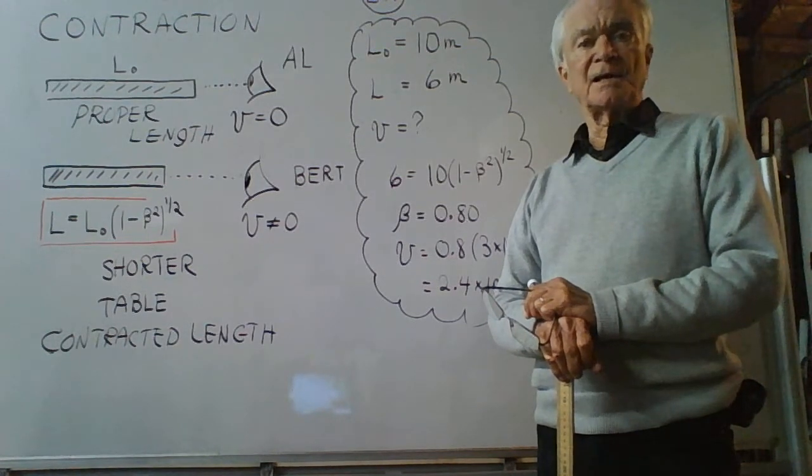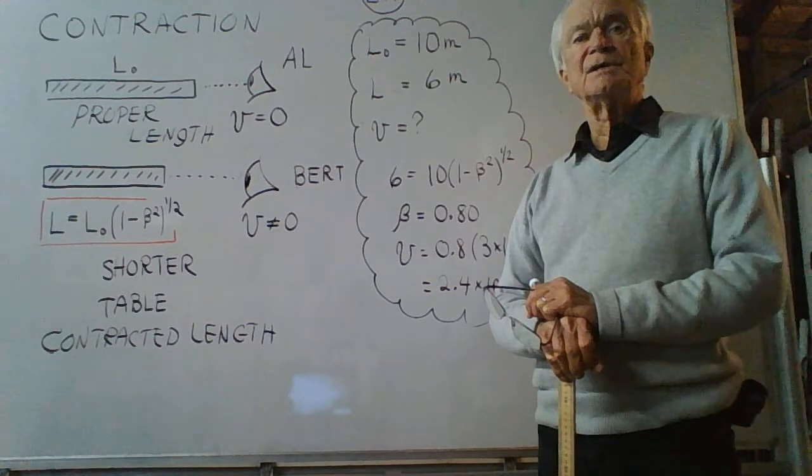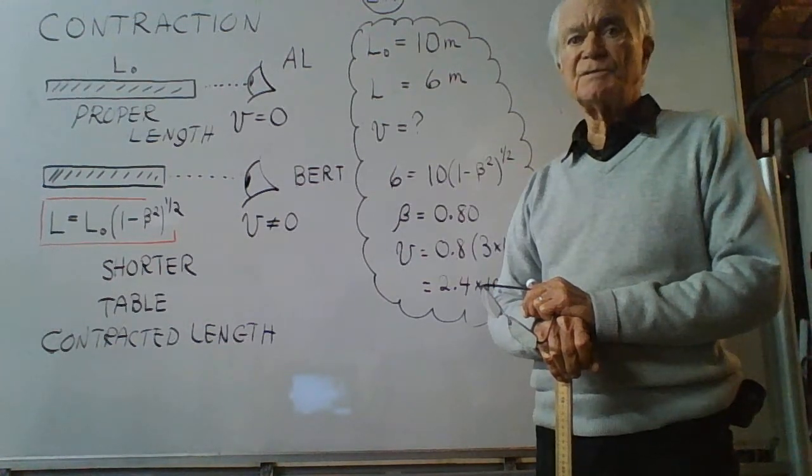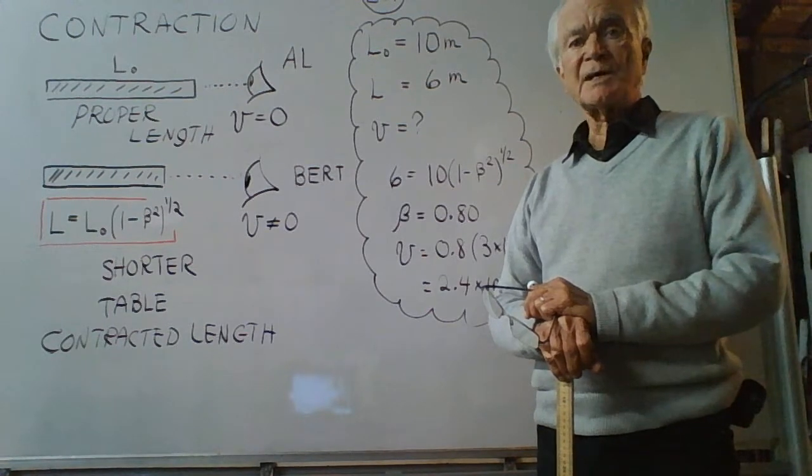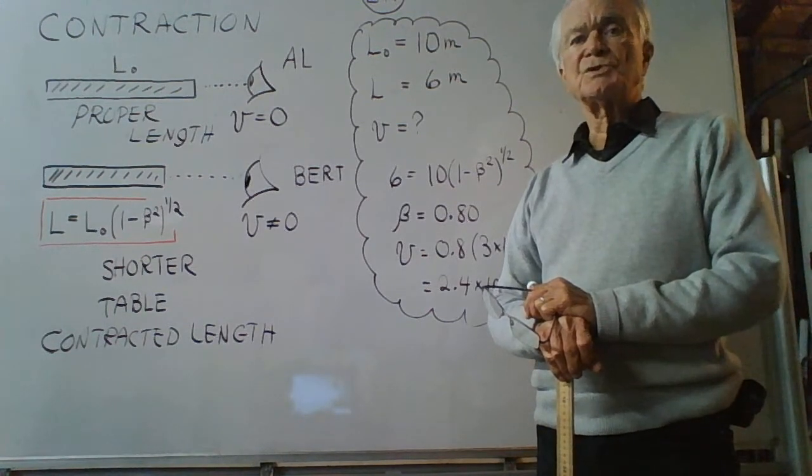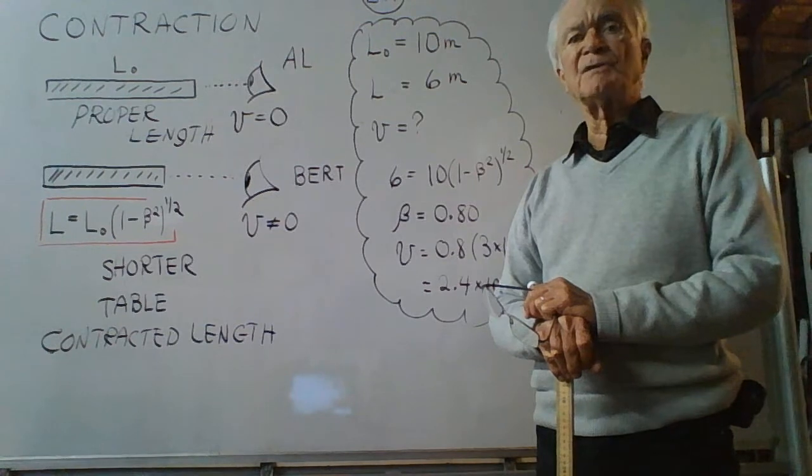That length, that path, is not moving relative to the catcher, or vice versa. Therefore, the catcher measures the so-called proper length of that path.